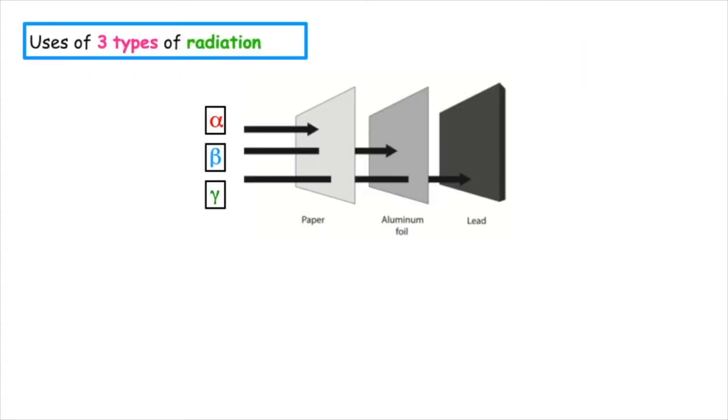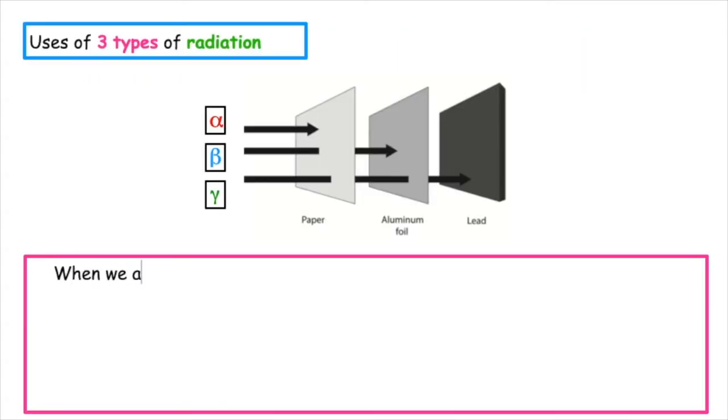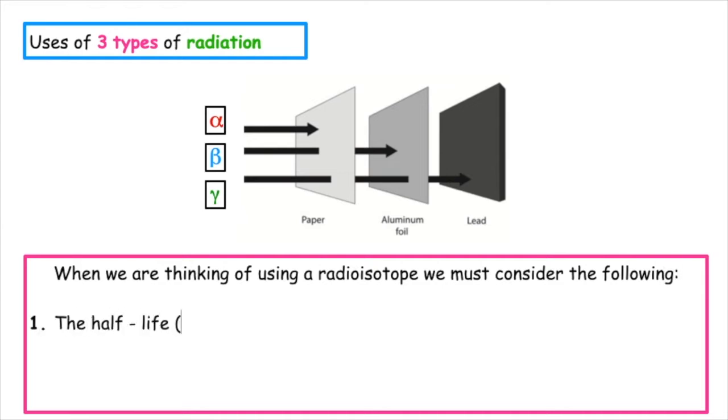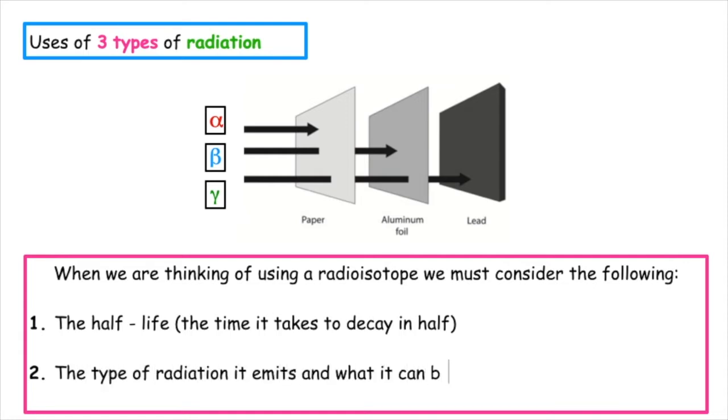Alpha, beta, and gamma radiation have many different types of uses, but when we are thinking about using a radioisotope, we must consider the following things. One, we have to look at the half-life of that radioisotope, that is the time it takes to decay in half. And the second thing we have to consider is the type of radiation it emits and what it can be stopped by or how far it can travel.